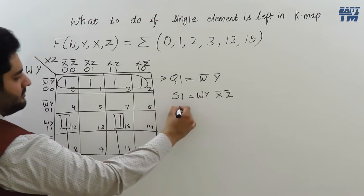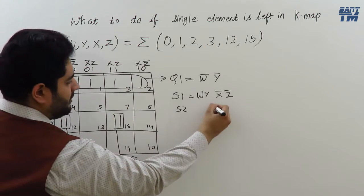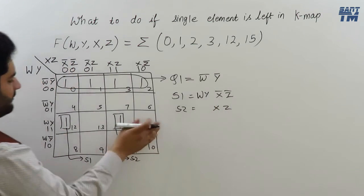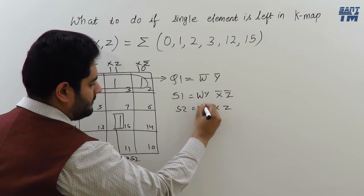For the single 2, it is occupying this full column. So, X, Z will come from column. And for the row, it is occupying this full row. So, W, Y will come from here. W, Y.